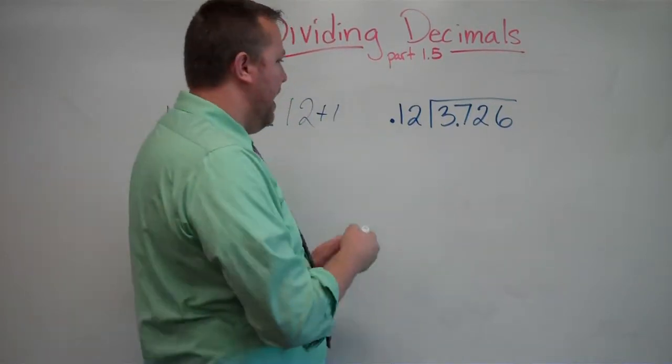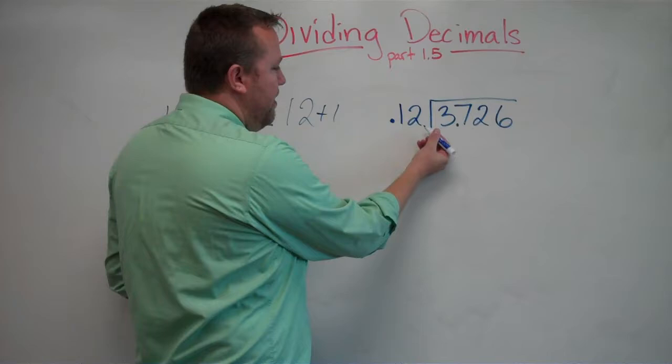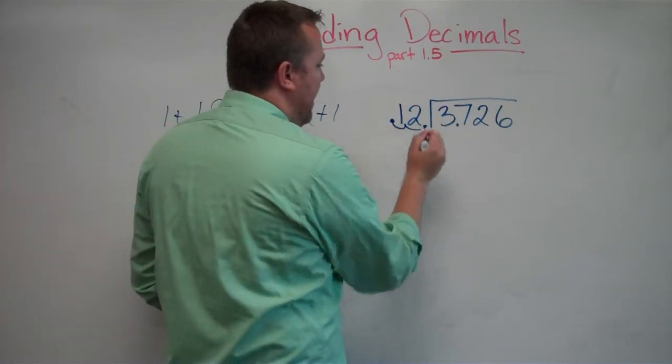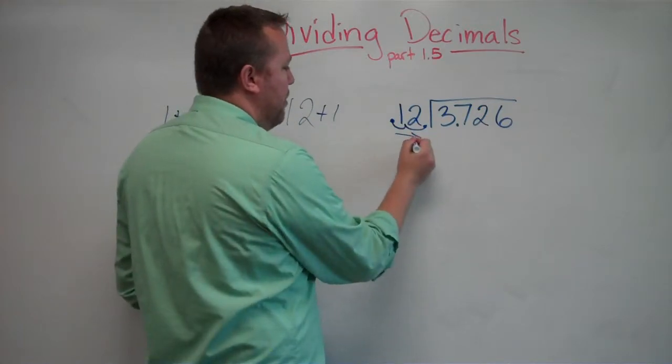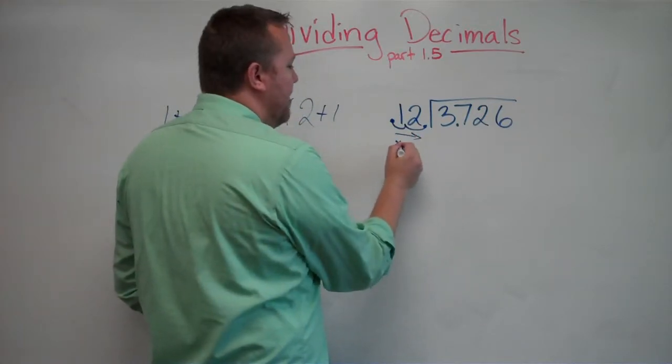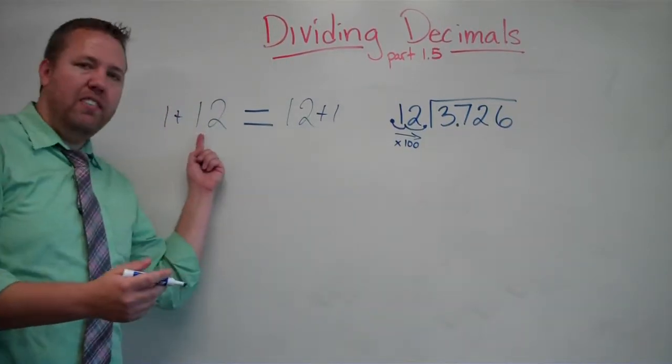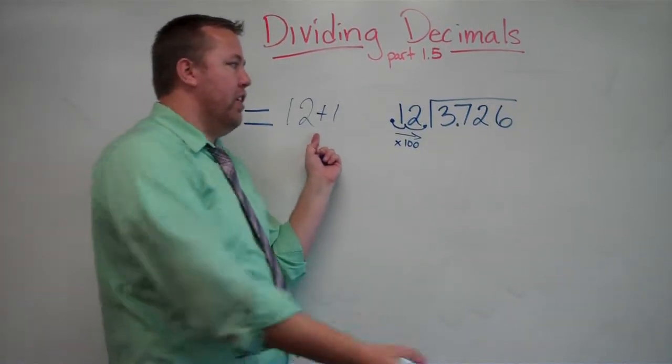We need to keep both sides of this, the divisor and the dividend, equal. Okay, equal ratios right here. And so what I do to one side, I'm going to multiply this by 10 and multiply it by 100. Okay, I'm moving the decimal over twice is actually timesing that number by 100.